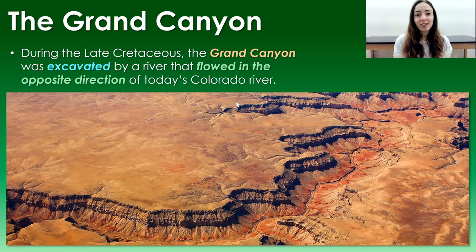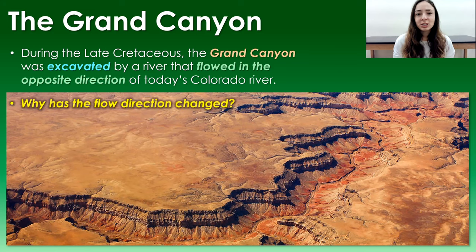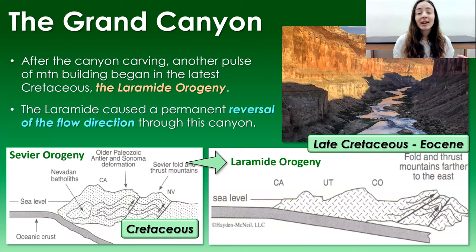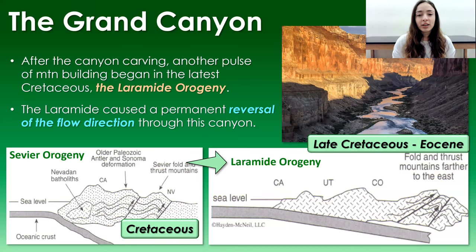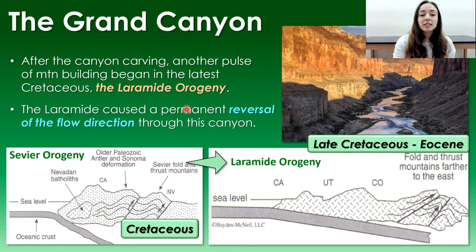Since we're talking about the Cretaceous, I should mention the Grand Canyon, which was largely excavated to its current depth during the Cretaceous — but by a river that flowed in the opposite direction of today's Colorado River. Why did the flow direction change? That brings us to the third stage of mountain building I mentioned earlier: the Laramide Orogeny, which started at the very latest Cretaceous and continued into the Cenozoic through the Eocene epoch.